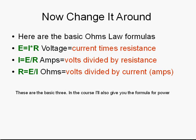Here are the basic Ohm's Law formulas. E equals I times R — voltage equals current times resistance. I equals E divided by R — volts divided by resistance gives amps. And R equals E divided by I — resistance in ohms equals volts divided by current, or amps. These are the basic three. In the course, I'll also give you the formula for power.